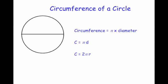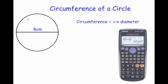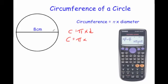Let's have a look at a typical question. Here we've got a circle with a diameter of 8 centimetres and we've been asked to calculate the circumference. To do that, first write down the formula: circumference equals pi times diameter. So the circumference is going to equal pi times 8.